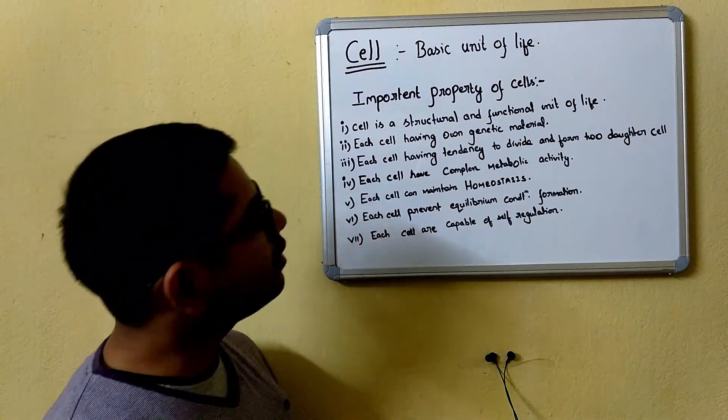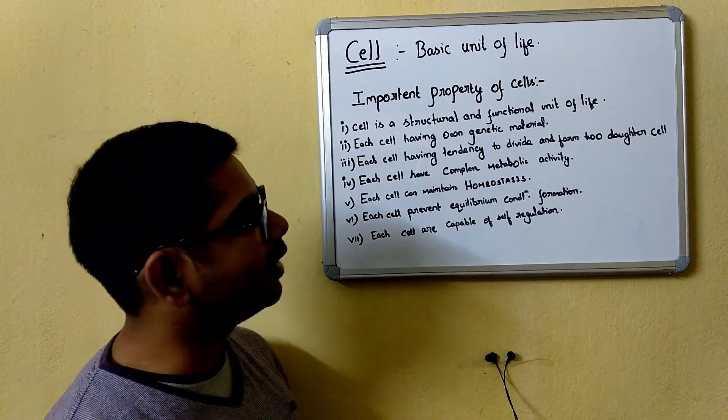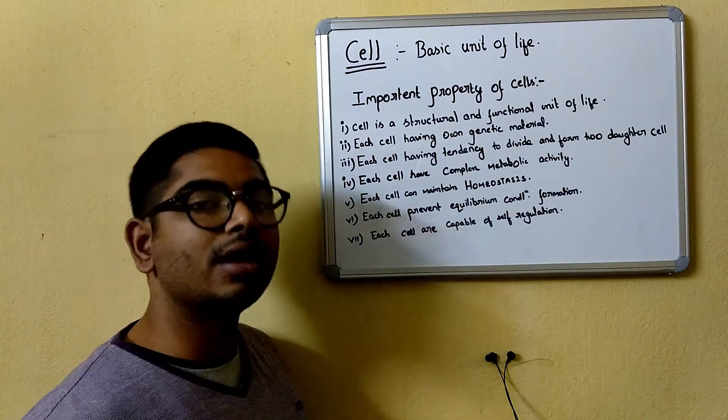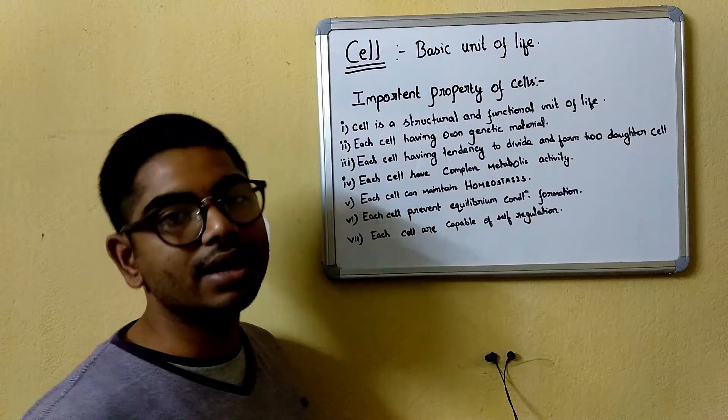Third, each cell has the tendency to divide and form two daughter cells. This means a cell is made from a pre-existing cell.